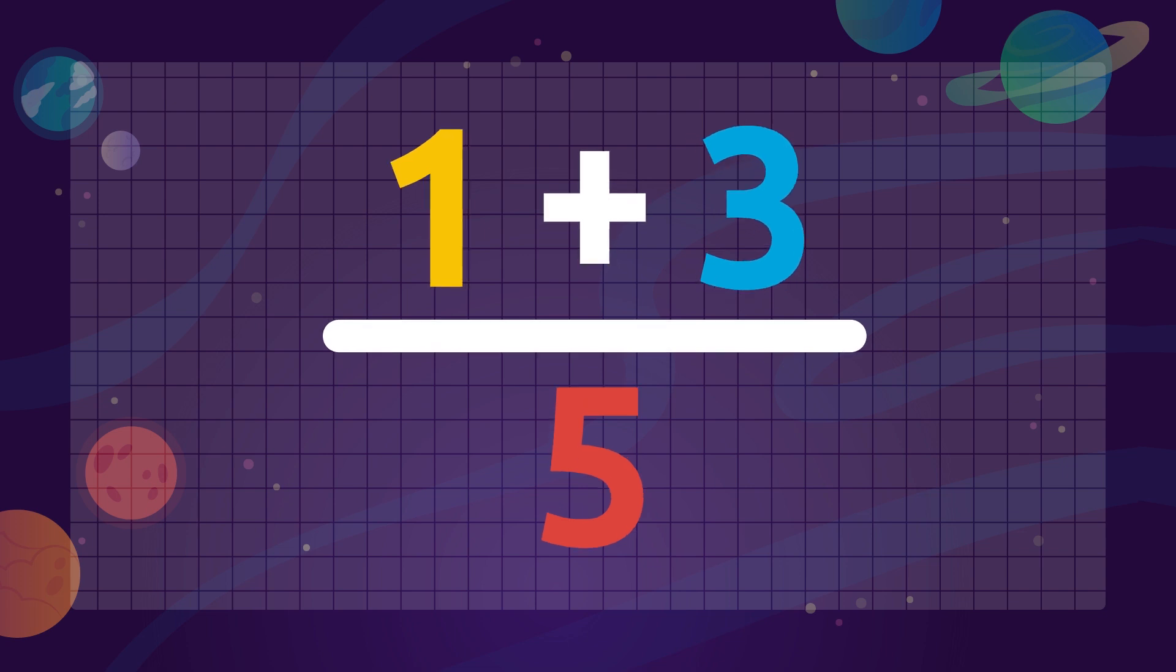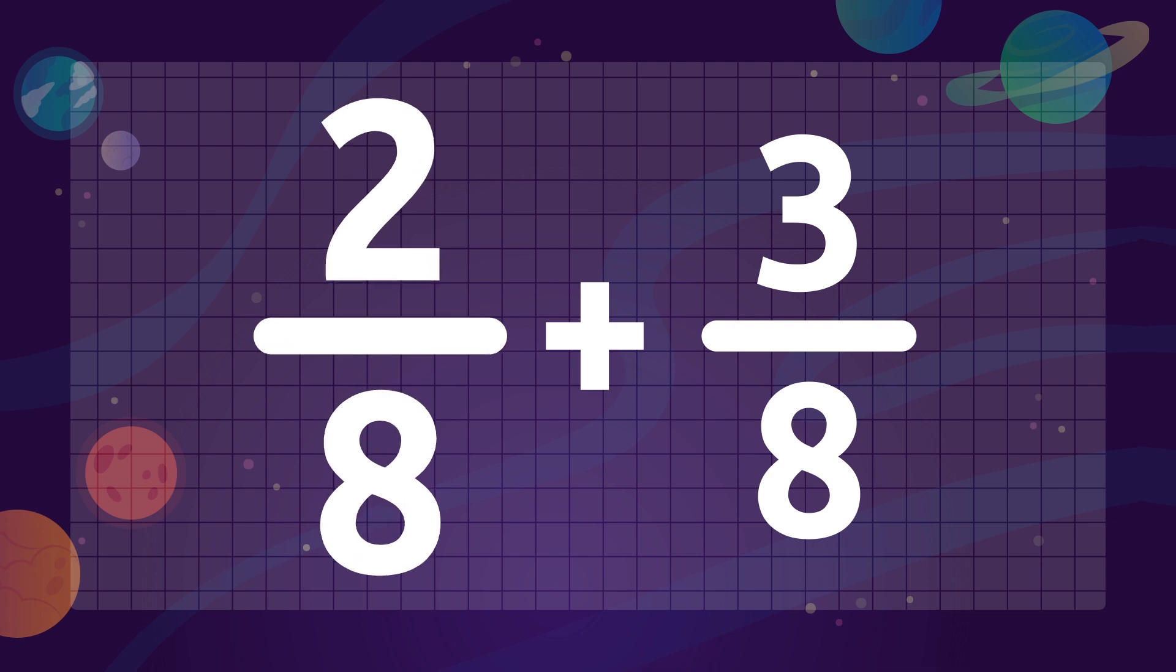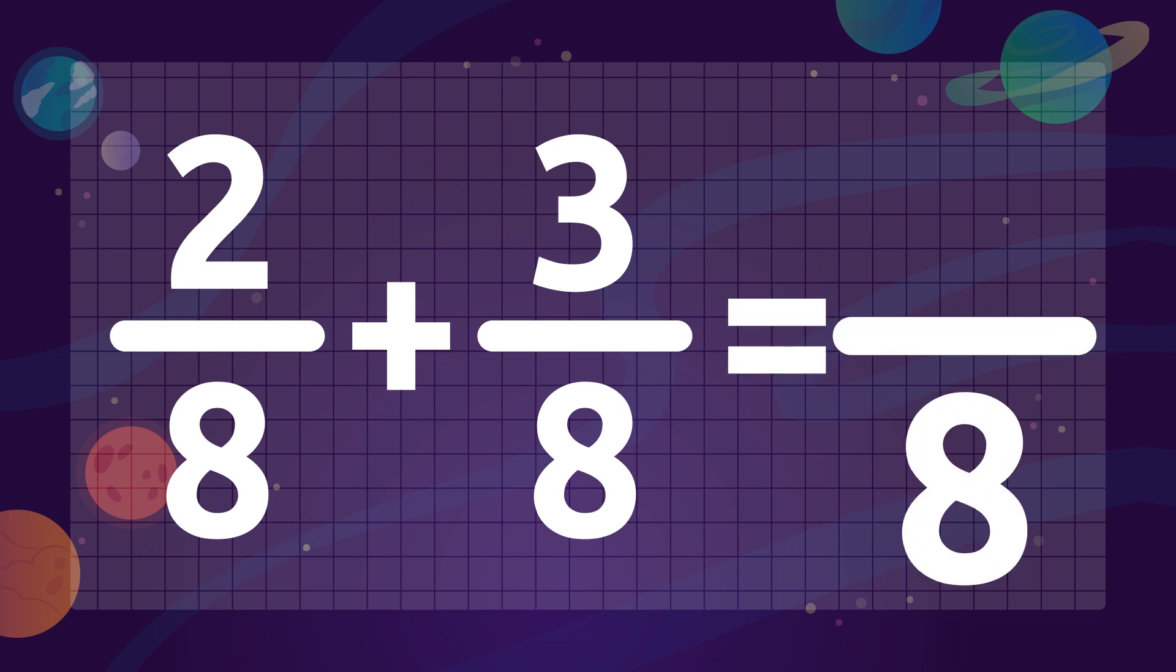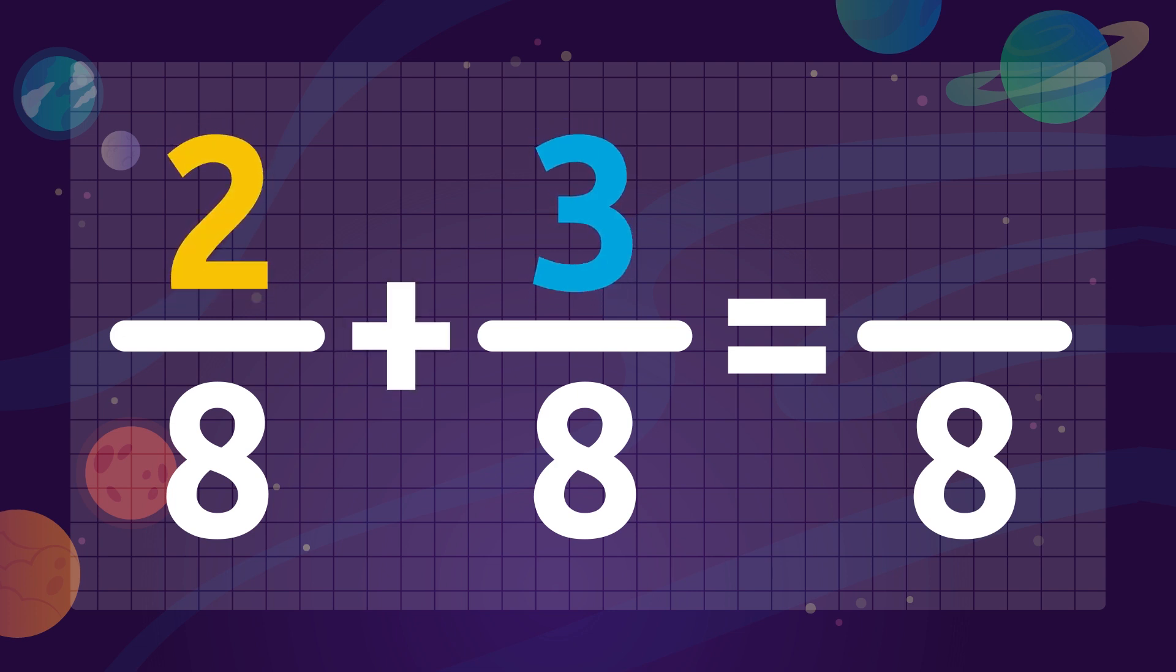Let's see an example. To add 2 over 8 plus 3 over 8, we leave the common denominator, in this case it's number 8, and we add the numerators. That is 2 plus 3 which equals 5. This result, number 5, will be the numerator. The result is 5 over 8.